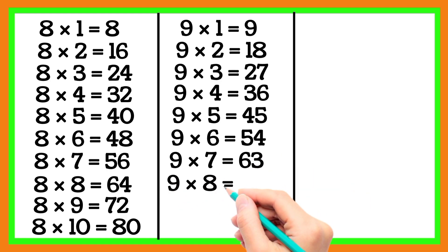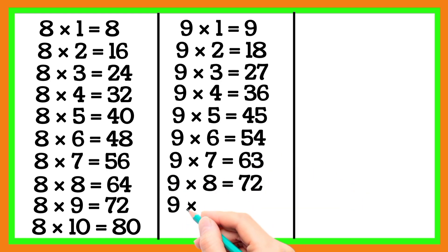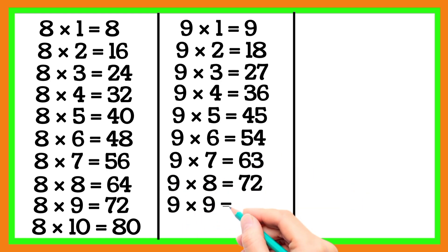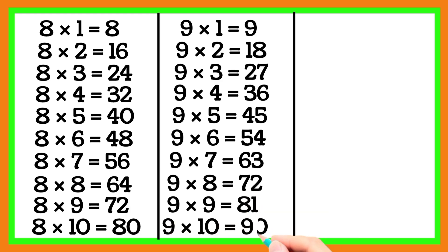9 7 is 63, 9 8 is 72, 9 9 is 81, 9 10 is 90.